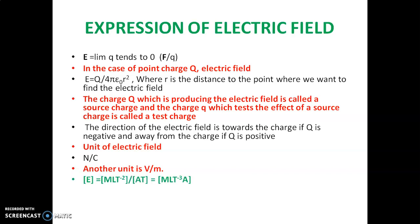Now we will see the dimension of electric field. The dimension of force divided by the dimension of charge gives the dimension of electric field. Dimension of force is MLT⁻², and dimension of charge is AT, because charge equals current times time. So the dimension of electric field is MLT⁻³A⁻¹.